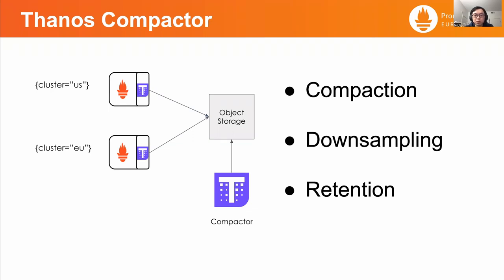From the implementation perspective, the compactor is just a cron job. For example, it runs every five minutes, and each run is called an iteration.